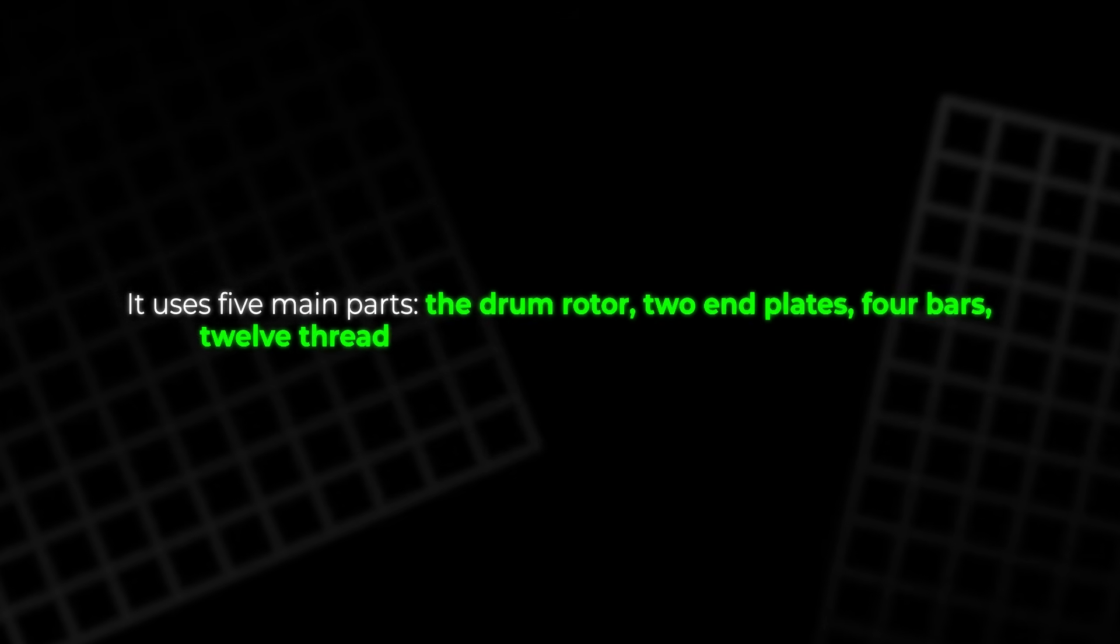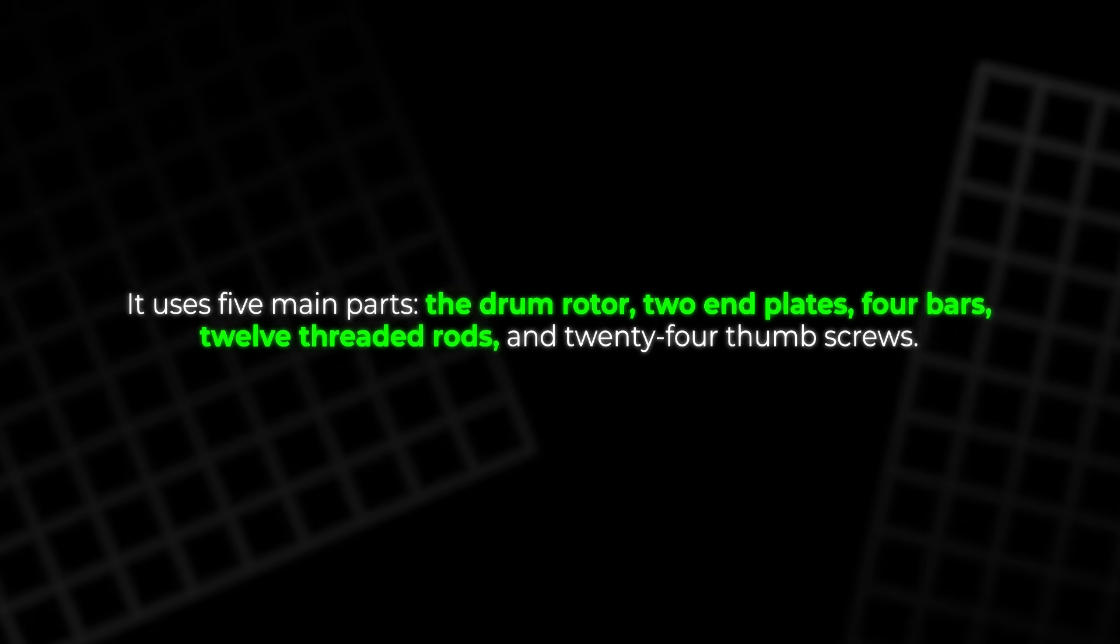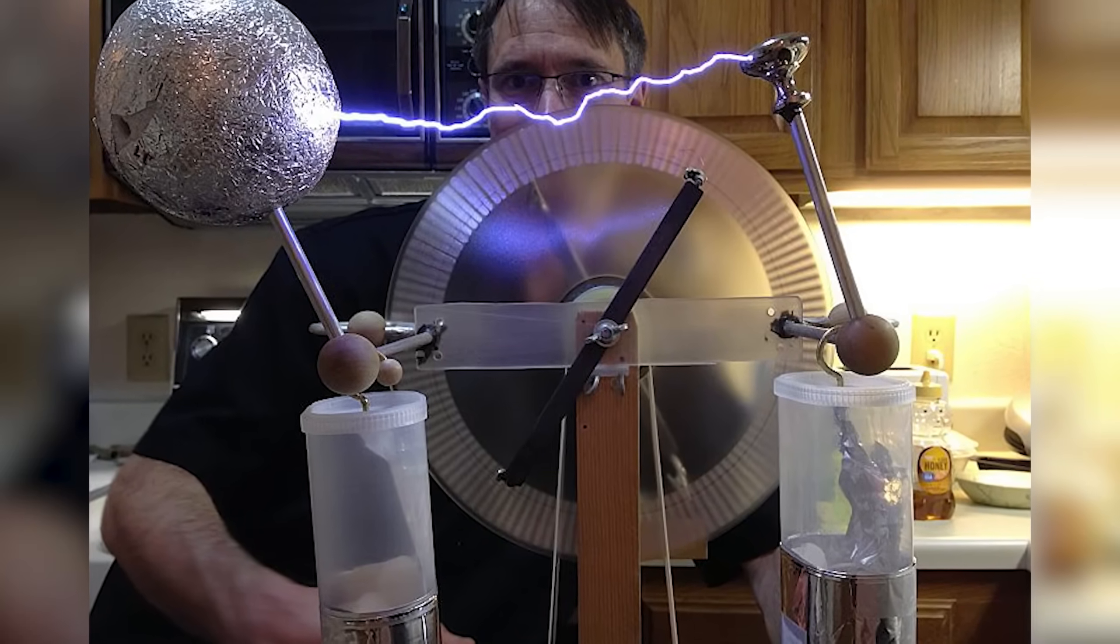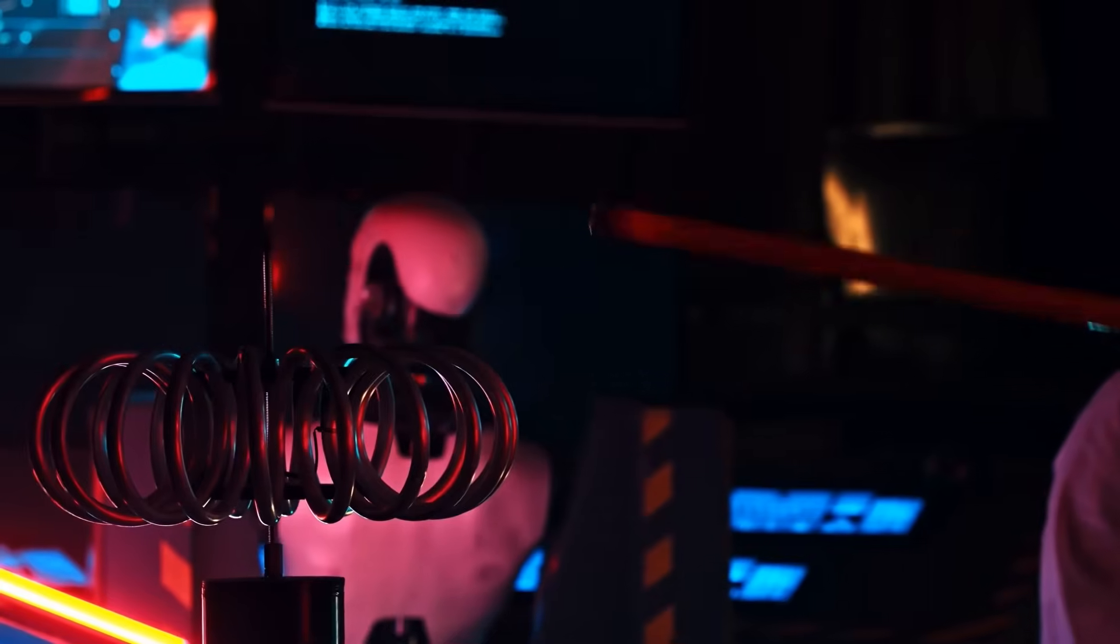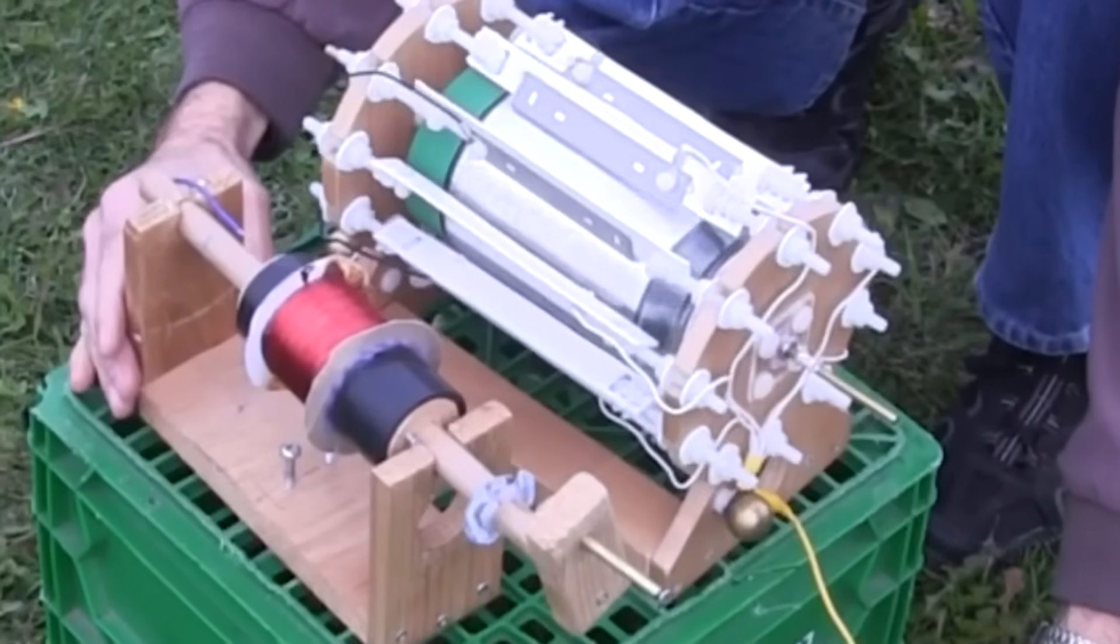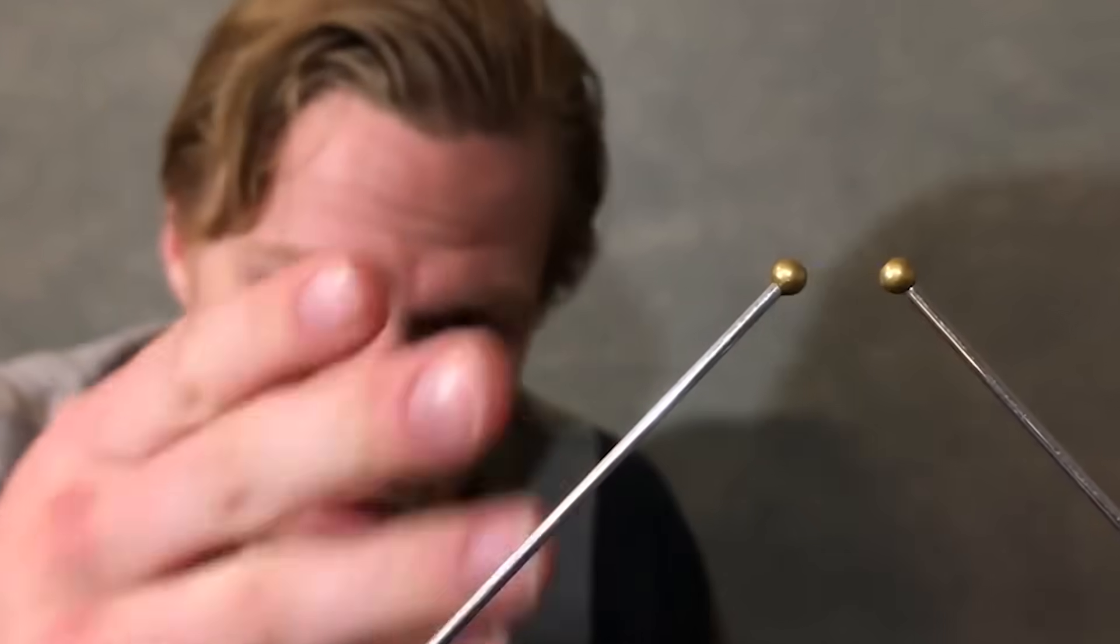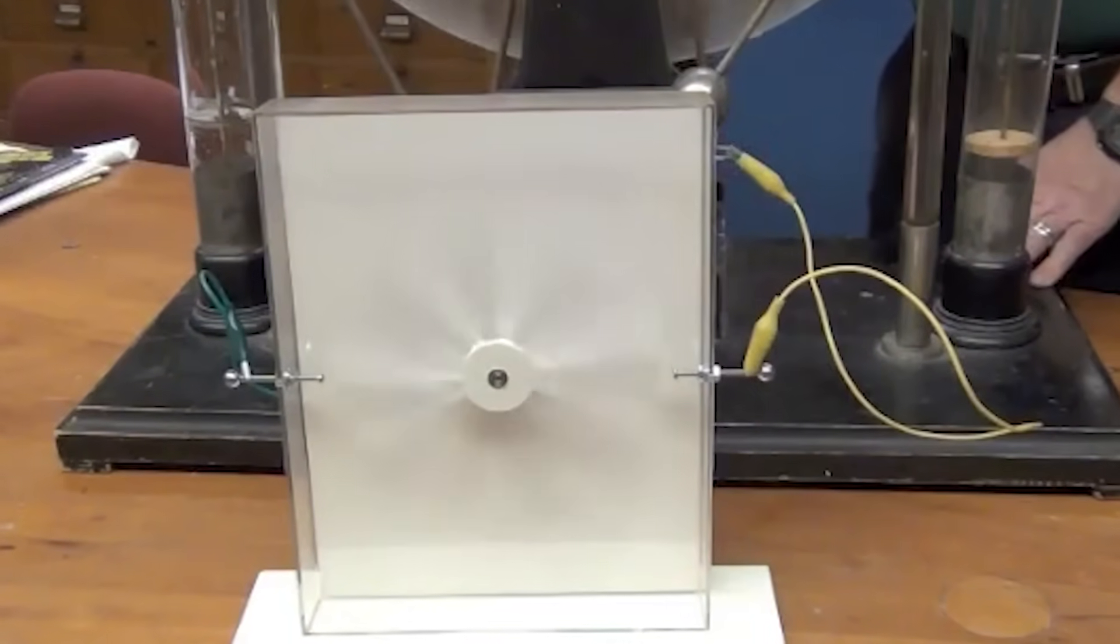Its design is intentionally simple. It uses five main parts. The drum rotor, two end plates, four bars, 12 threaded rods, and 24 thumb screws. Most of the machine is plastic because plastic holds charge without leaking it. Metal surfaces leak charge too quickly, reducing efficiency. The drum is the rotating element. The end plates support the drum with skateboard bearings. The bars hold the rods. The rods hold the combs made of long nails. Each part contributes to forming the electric field pattern needed to create rotation.